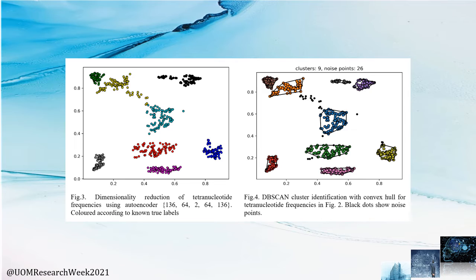With tetranucleotides using autoencoders, these two same species are shown again — colored with ground truth labels on the left. On the right-hand side, on this occasion, they have been identified as two separate species. Notably, in both representations, because these two species belong to the same family, they are placed in very close proximity, and none of the other species belong to this particular family.